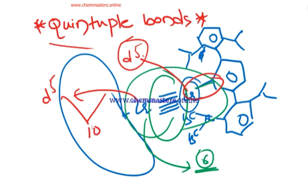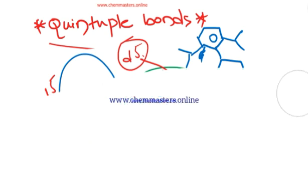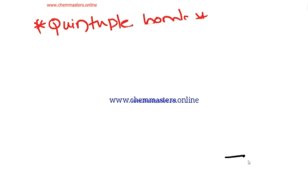For binuclear complexes which have quintuple bonds, we can use a special molecular orbital diagram where the molecular orbitals can be drawn. First, the d z-squared makes a bonding sigma hybrid orbital.